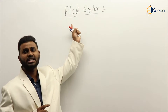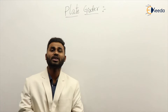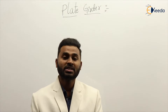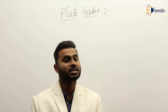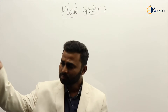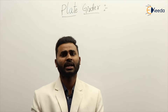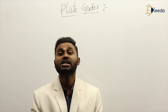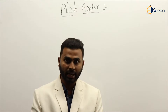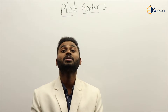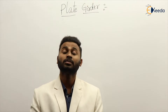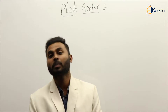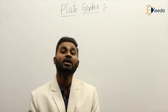The next topic of our discussion is plate girder. We have discussed when we go for plate girder — in which condition. Our first preference is the rolled steel section as a beam. If that rolled steel section is unable to take the bending moment, then we go for a built-up section. If the built-up section is also unable to take the given bending moment, then we go for a plate girder.